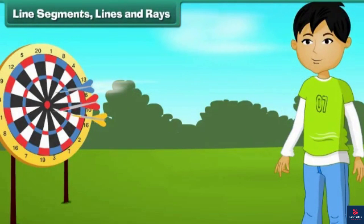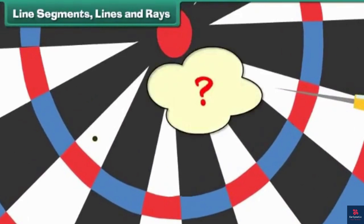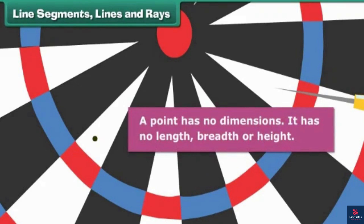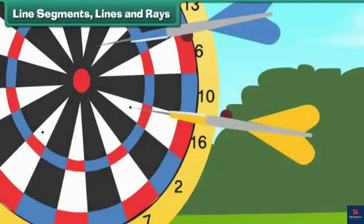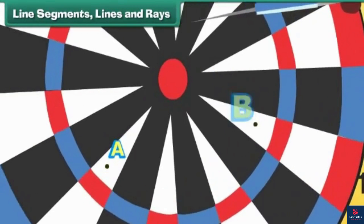Rahul perfects his aim by throwing darts at the dartboard. Here is one such dart. Let us remove it. What do we observe? The dart has left a mark on the dartboard. The mark is called a point. A point has no dimensions — it has no length, breadth or height.